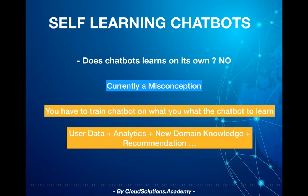Usually you would capture user behavior details through user interactions with the chatbot application. This includes capturing user analytics information like likes or dislikes, either through explicit or implicit means. Explicit information can be a user rating a product, and implicit can be the time a user spent looking at a response.